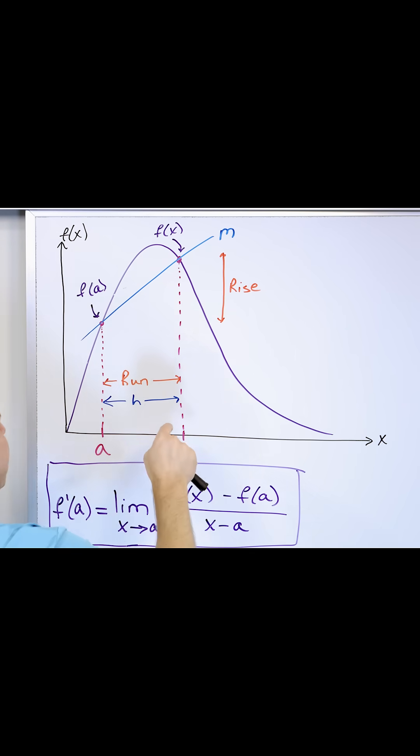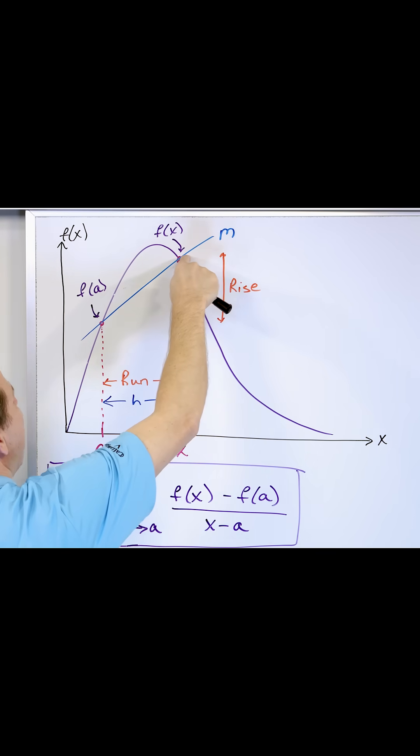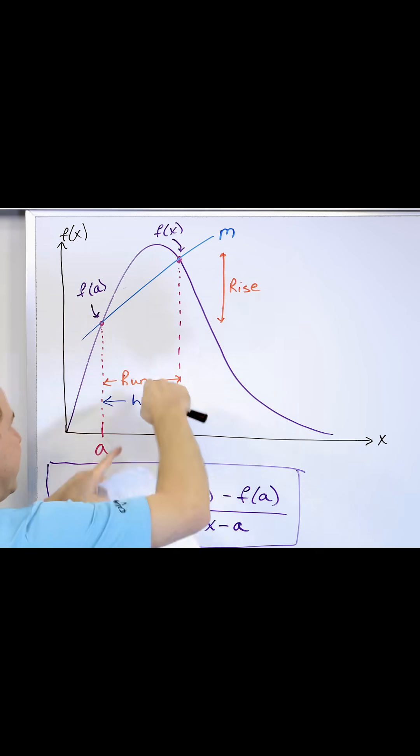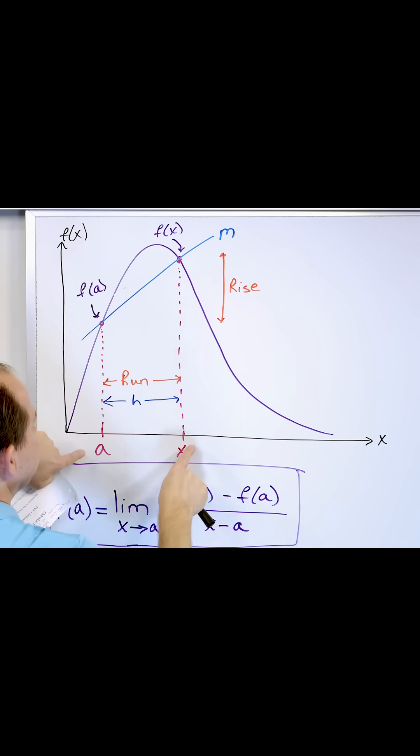What you do is you say, well, the rise is this y value minus this one, which is f(x) minus f(a). That's just the vertical distance between the points divided by the horizontal distance x minus a.